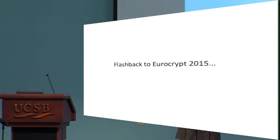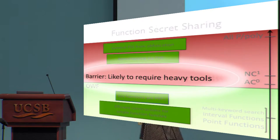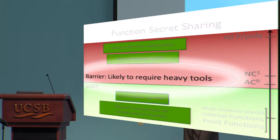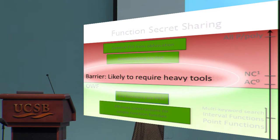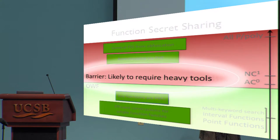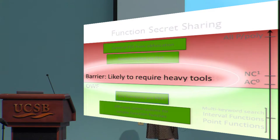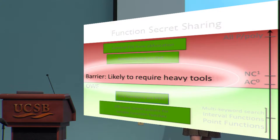Let's rewind to Eurocrypt 2015, where I presented work with the same authors on what's known as function secret sharing. The important part is this giant region in red: one of the things we showed is that if you were able to construct function secret sharing for classes of programs sufficiently rich — for example NC1 and above — this would give you succinct two-party computation protocols, essentially breaking the circuit size barrier for comparable classes of circuits.